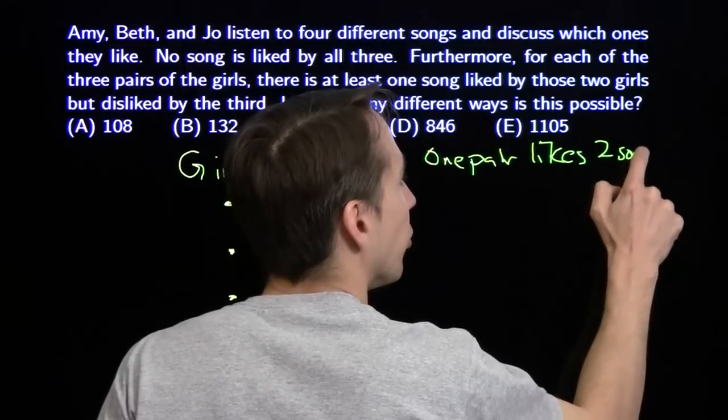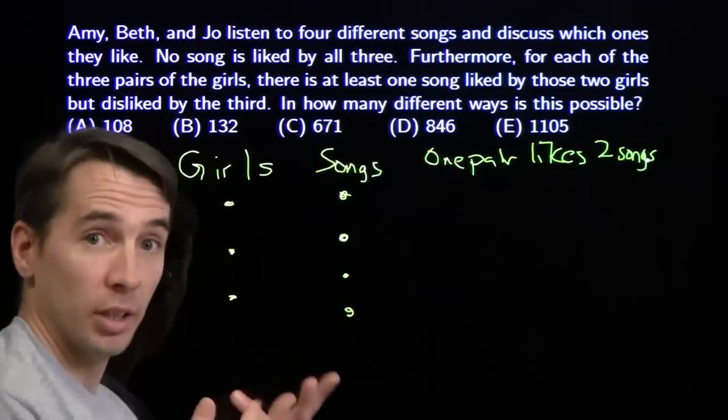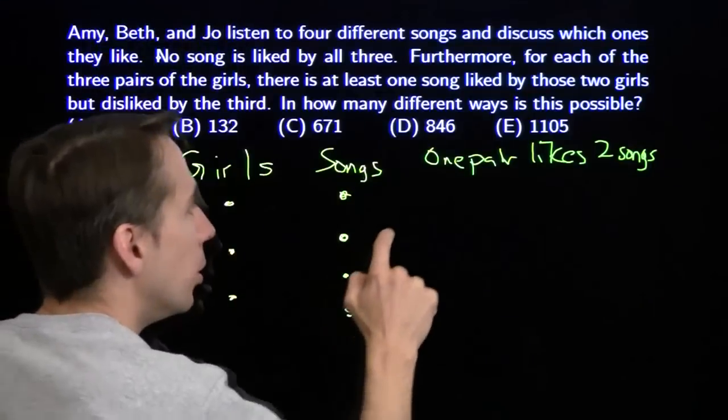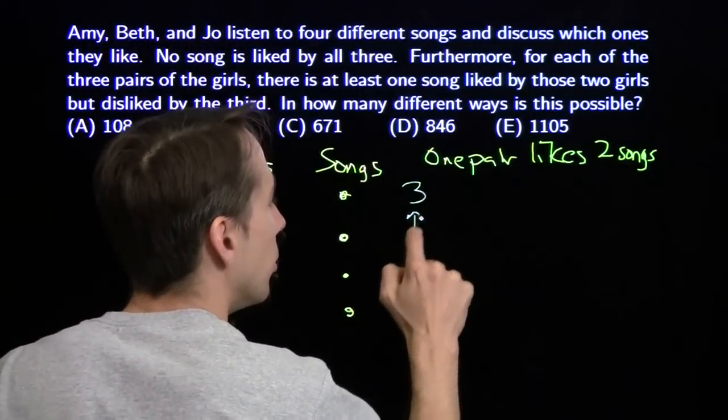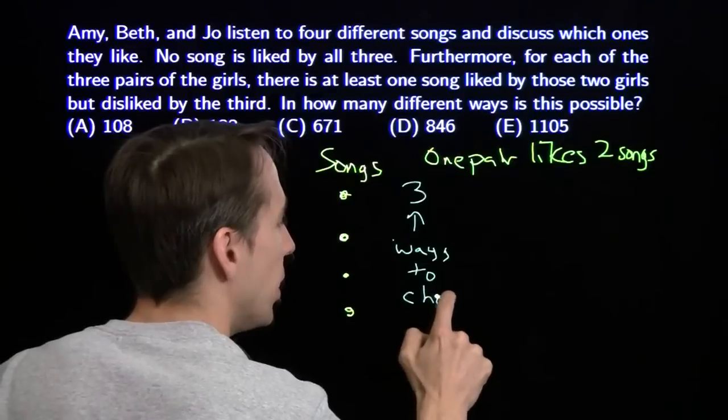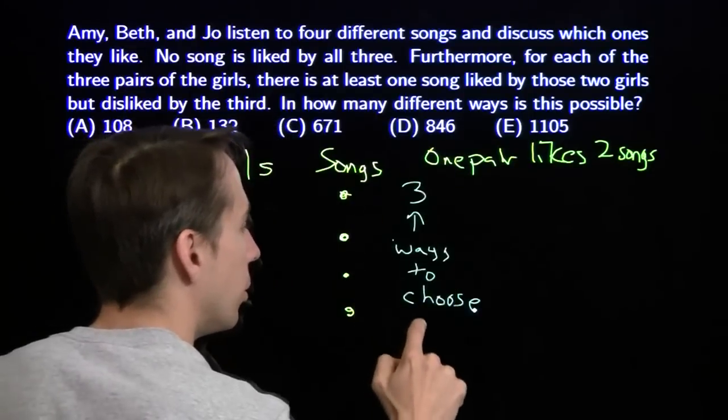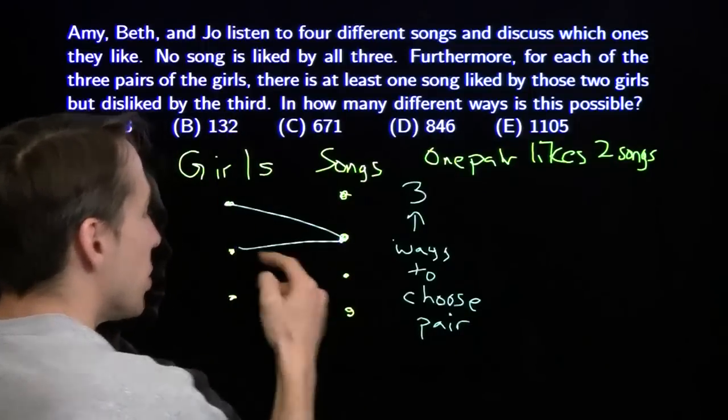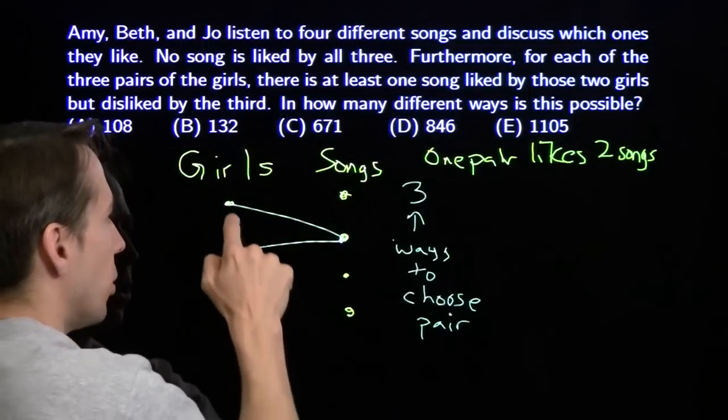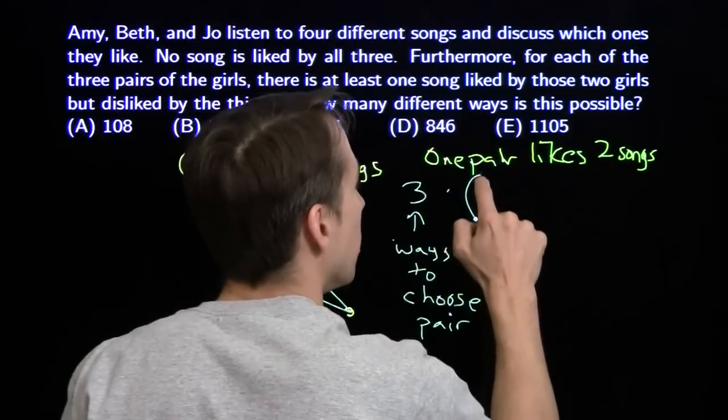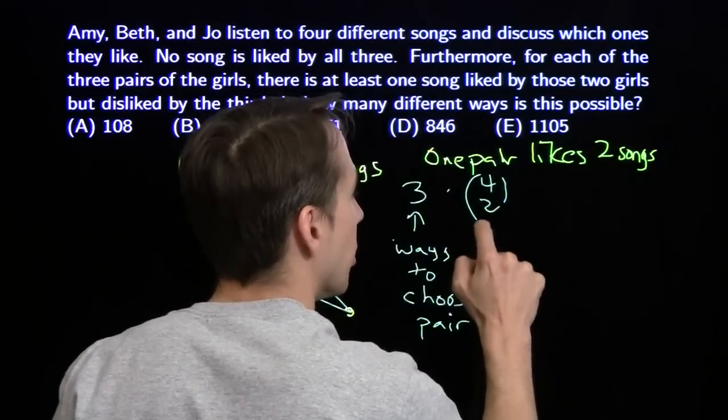Of course, we have to start off by choosing that pair of girls. There are three pairs to choose from. So we've got three ways to choose which pair of girls likes two songs. And then once we've chosen that pair, there are four songs over here, so there are four choose two ways to choose their songs.